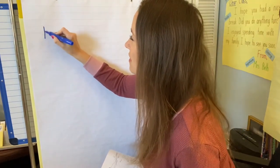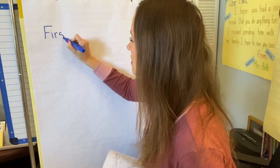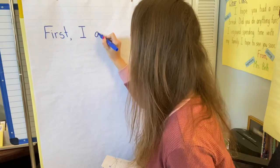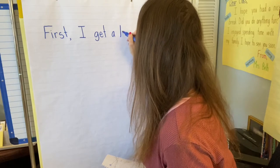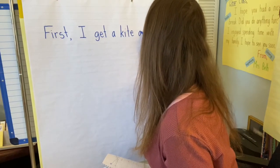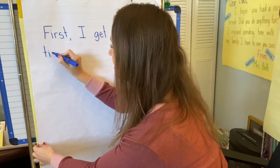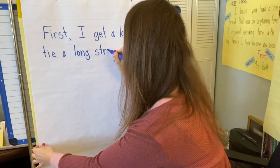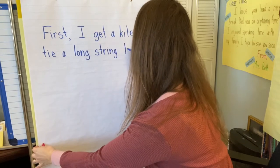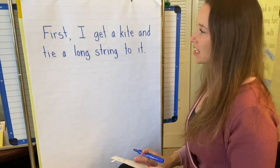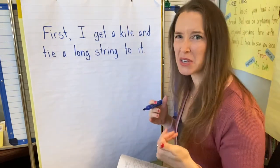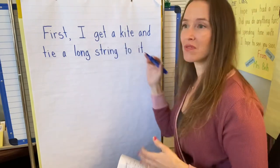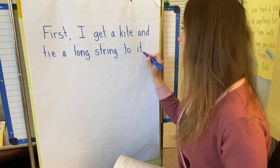So I'm going to start with my first, because that's my first step. First gets a capital letter because it's starting my writing. First, comma. So I'm thinking through what was my first step. First, I get a kite and tie a long string. I'm trying to be a little bit more detailed as I'm doing my writing — that way, if somebody's going to do this, they can follow my directions more easily. I put my period in because that was the end of my first step.